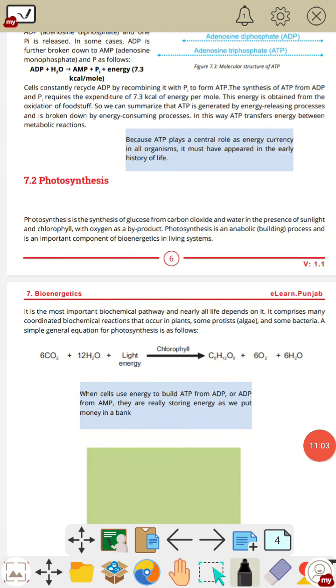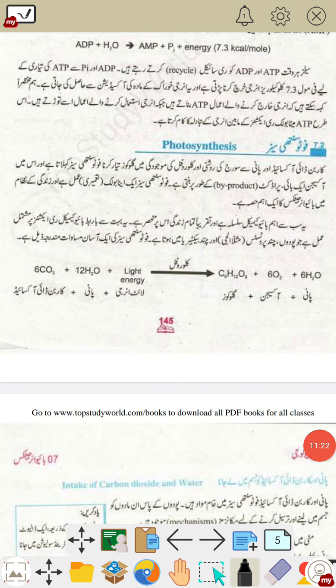Now students, mark the short question related to photosynthesis. The question will be: what is photosynthesis? The answer starts from the definition and also includes the equation of photosynthesis. For Urdu medium students, the question is the same — what is photosynthesis — and the answer covers the definition and equation as discussed.